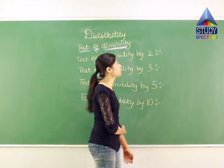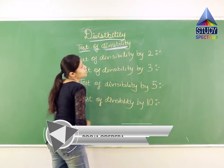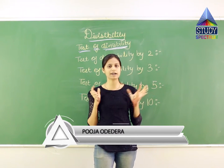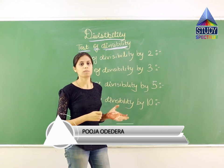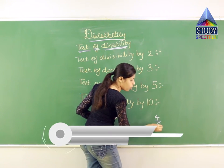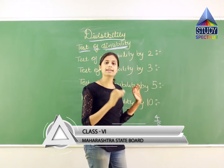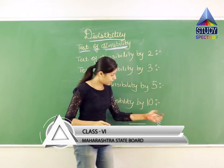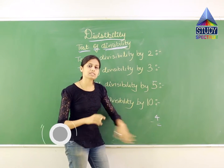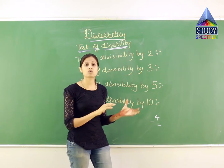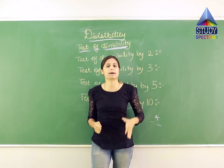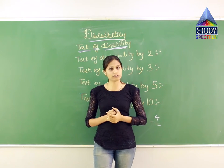Let us start with the first chapter, which is divisibility. What do you understand by divisibility? We have already done the division method. In division, we used to check whether 4 is divisible by 2 or not. In divisibility, we will do the same — we will decide what 4 is divisible by. That method of recognizing which number is divisible by which is the method of divisibility.